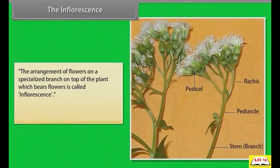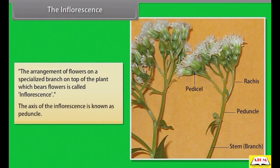The inflorescence is the arrangement of flowers on a specialized branch on top of the plant which bears flowers. The axis of the inflorescence is known as peduncle.